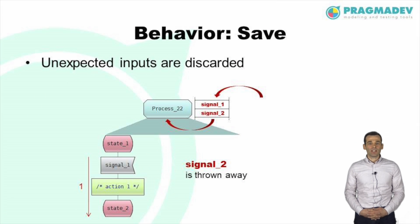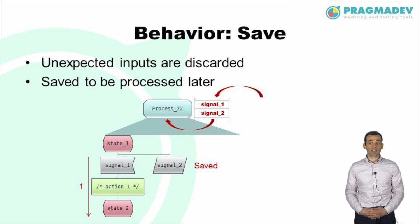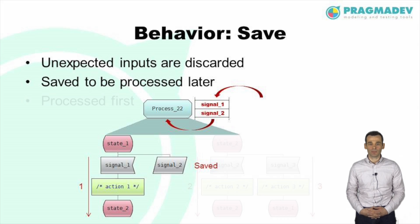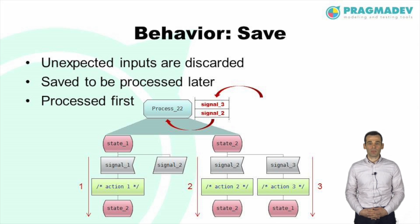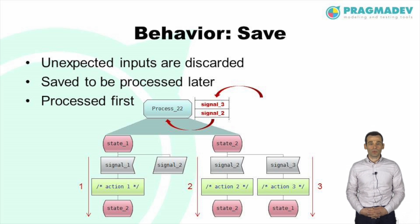When a message is received while unexpected it is thrown away, which is considered normal behavior in SDL. It is however possible to save messages so that they can be processed when execution reaches a new state. When a new state is reached, saved messages will be processed before normal inputs. If signal 2 was saved in state 1, then when the process goes to state 2 it will first treat this message before any other messages in the queue. As a result, action 2 will be executed before action 3.